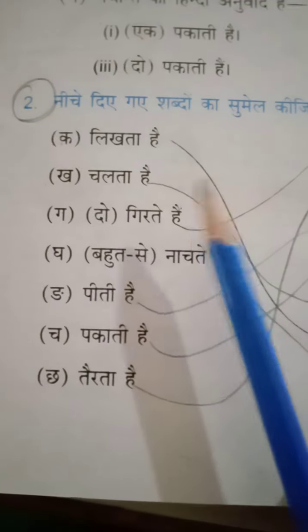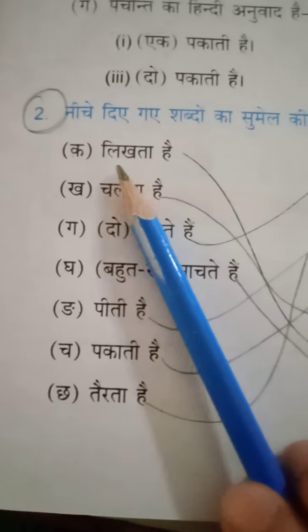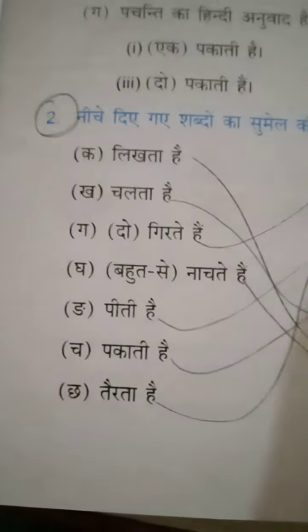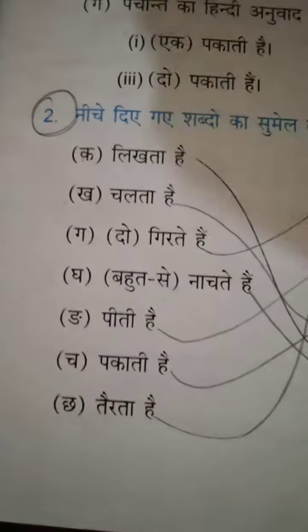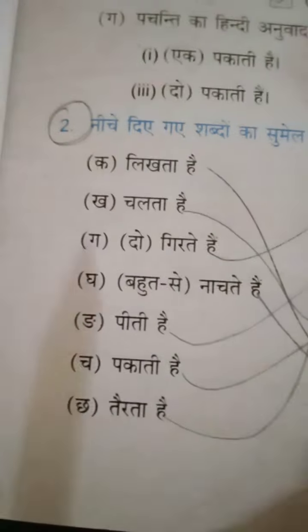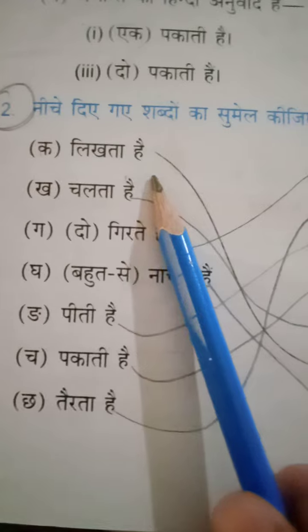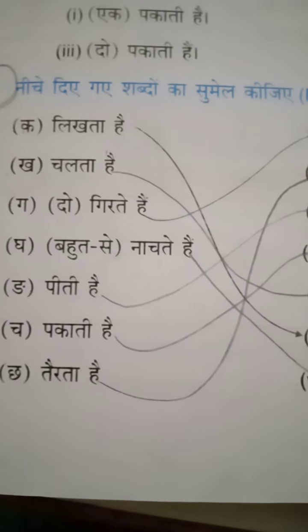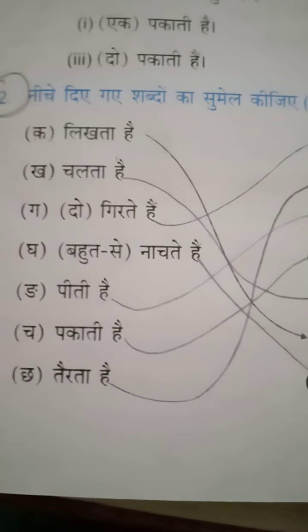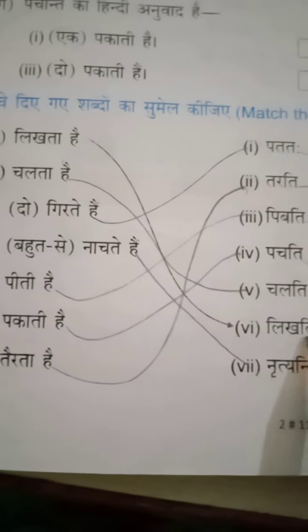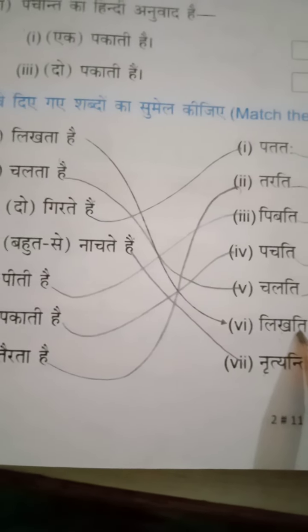We have to match these words with their Sanskrit and with their English equivalents. So first of all, this is word one — the Sanskrit word is given and you must match it with its English meaning.